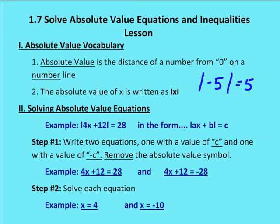Let's solve some absolute value equations. The first example is the absolute value of 4x plus 12 is equal to 28. If it's in the form absolute value of Ax plus B equals C, where A is some positive number, then I'm going to write two equations: one with a value of C as it is, and one with a value of negative C, removing the absolute value symbol. So I go from the absolute value of 4x plus 12 equals 28 to: 4x plus 12 equals 28, and 4x plus 12 equals negative 28.